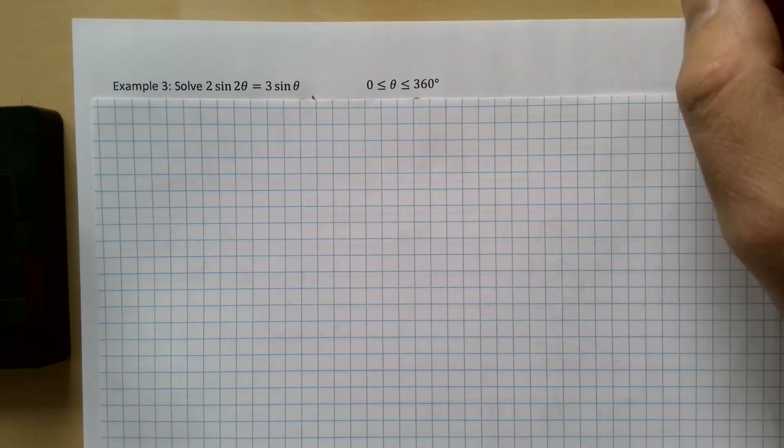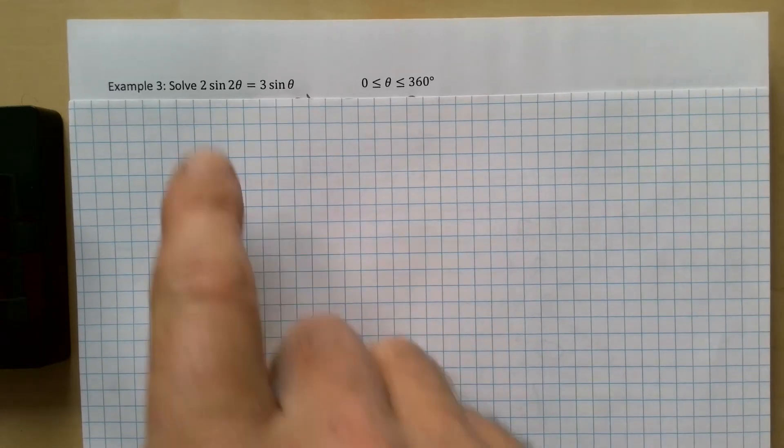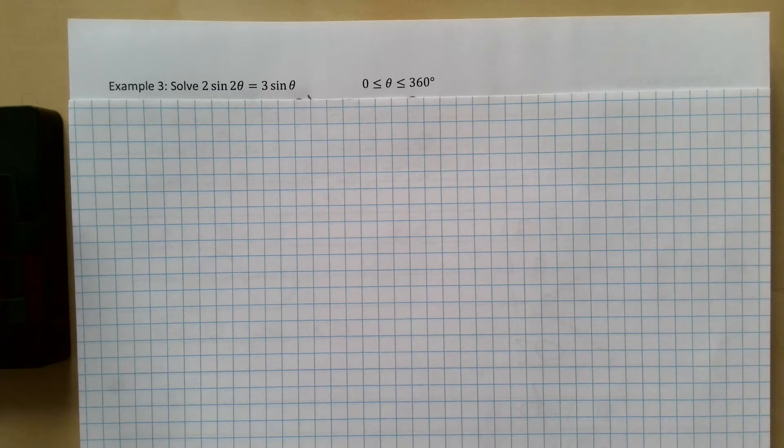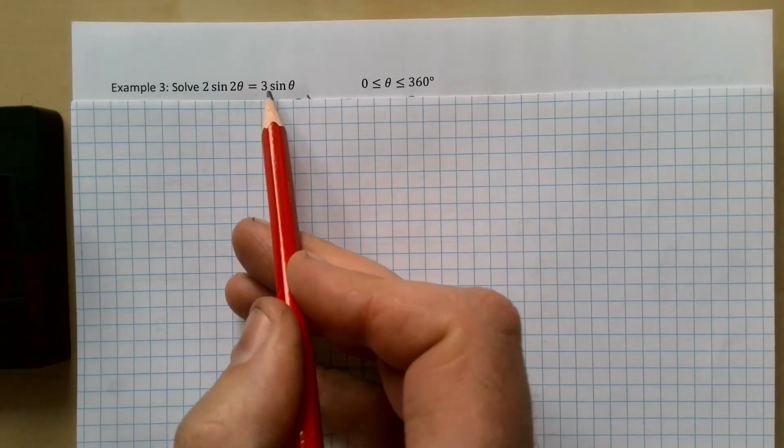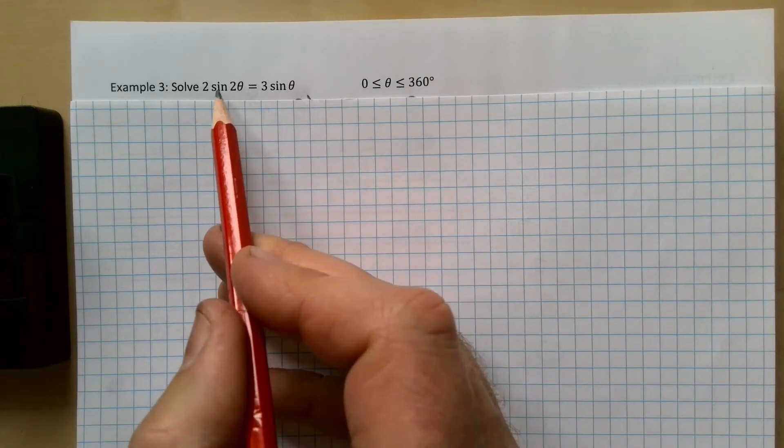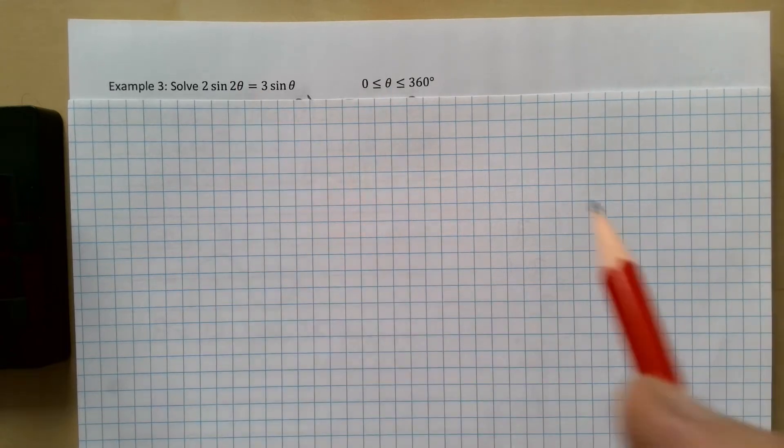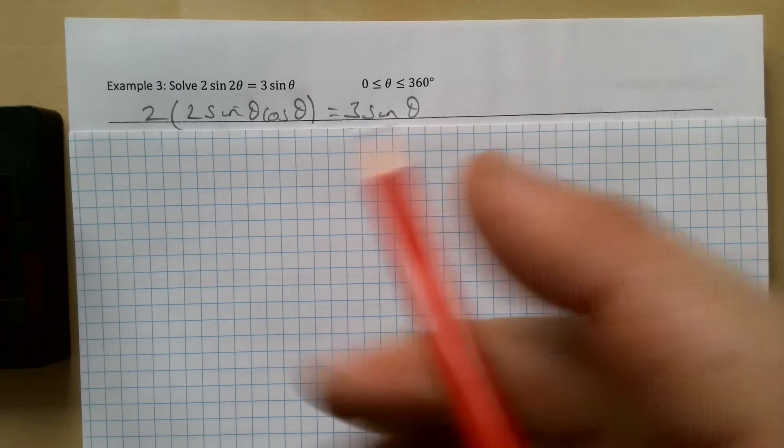Okay, this is A2 Pure and we're on Chapter 2 Trigonometry, looking at solving trig equations that include compound angles and double angles. So this one here, 2 sin 2θ = 3 sin θ. First of all looks okay because they're both sine thetas, but because this is a sine 2θ we can't join those two together like that. So we're going to use our double angle formula and move them from there.